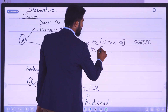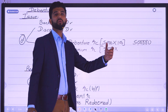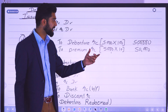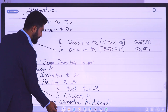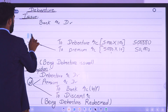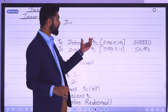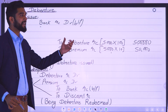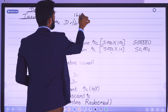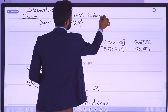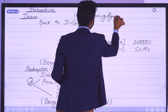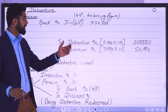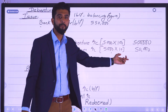Premium at ten percent: 5,000 into 100, ten percent — that gives 50,000. So the premium on issue is 50,000. The bank balance (balancing figure) comes out to 5,52,000.